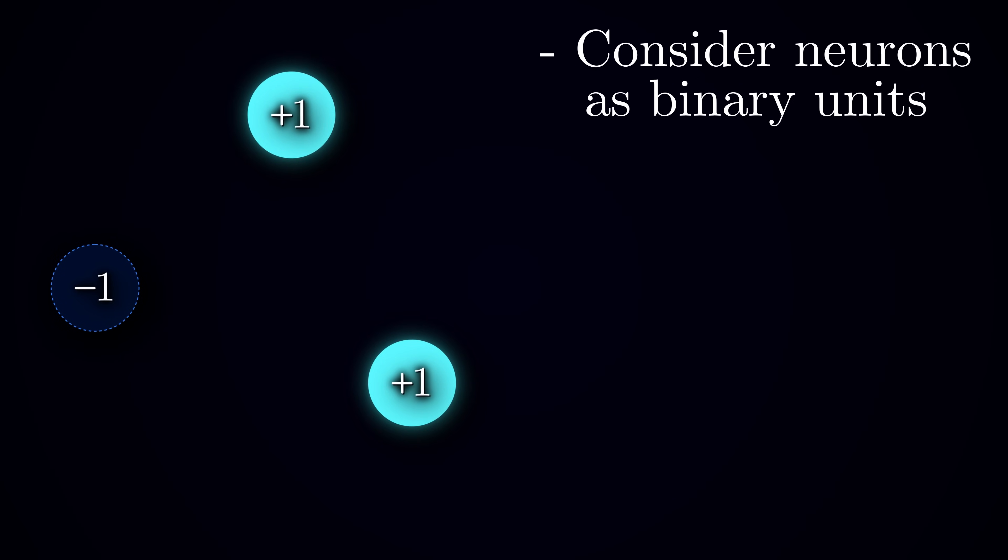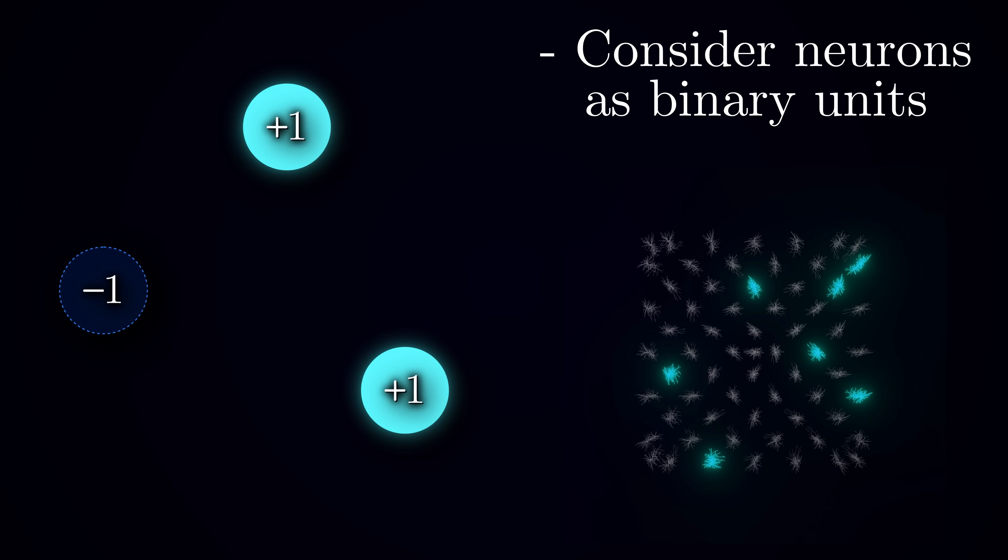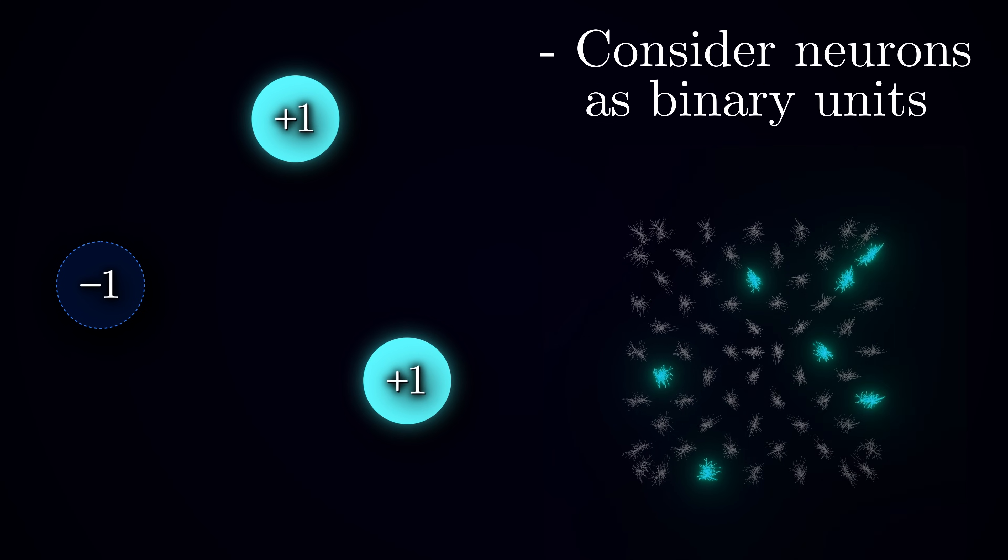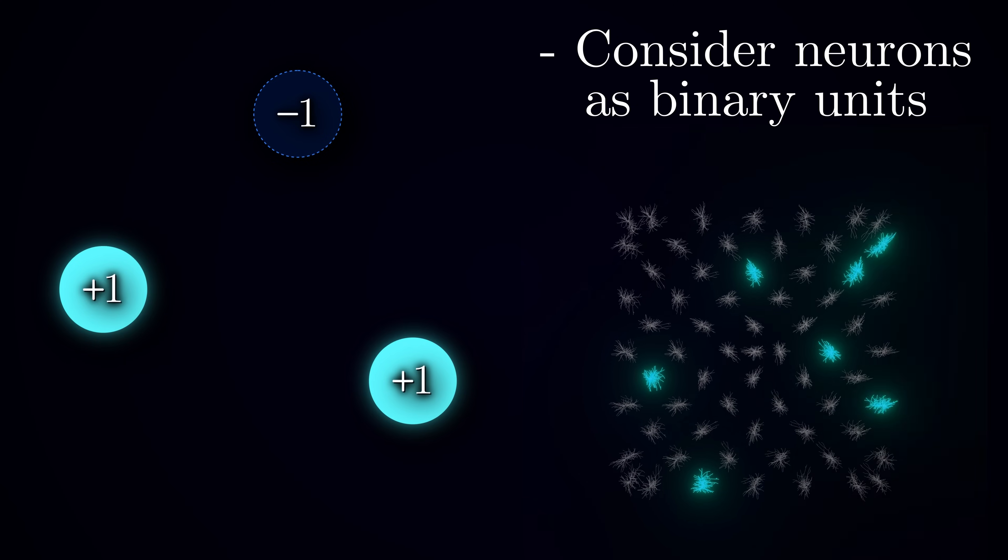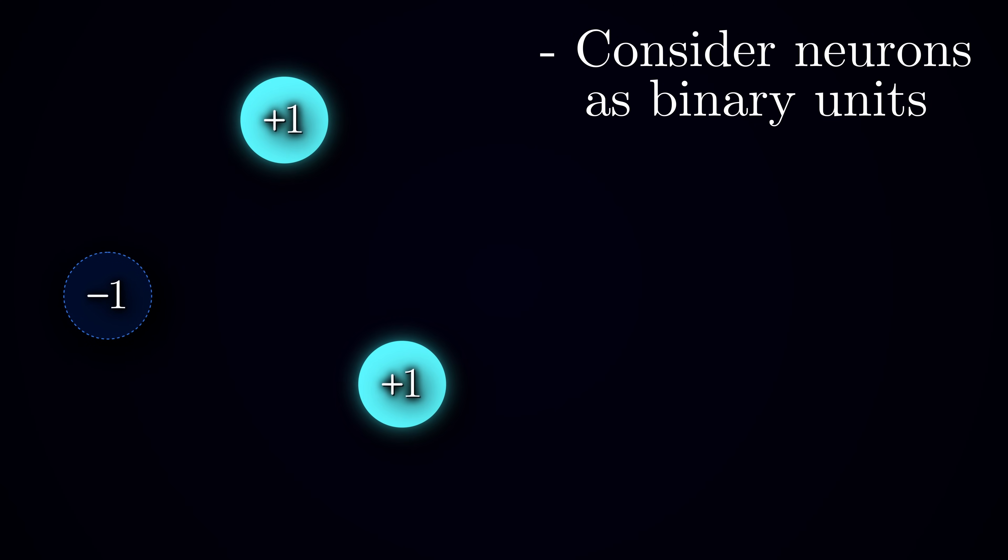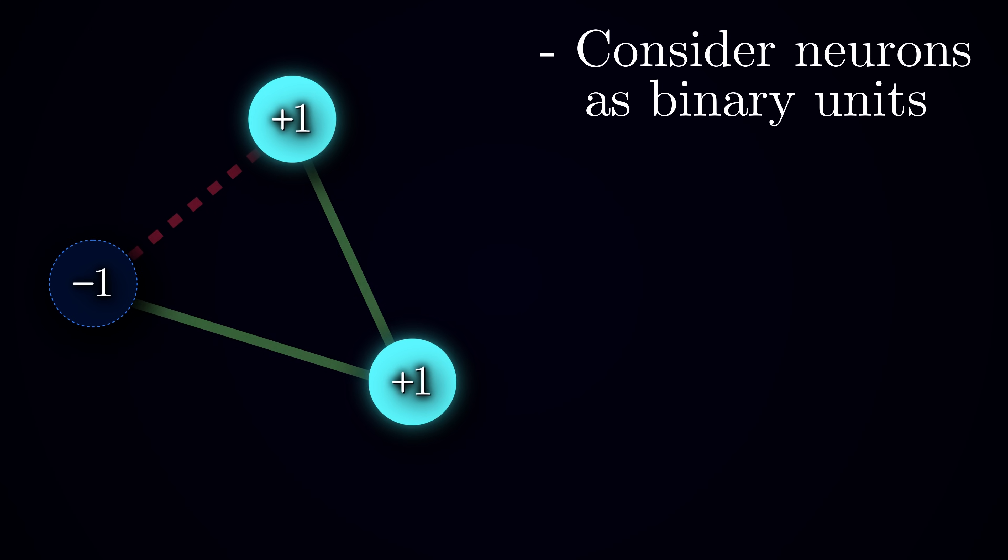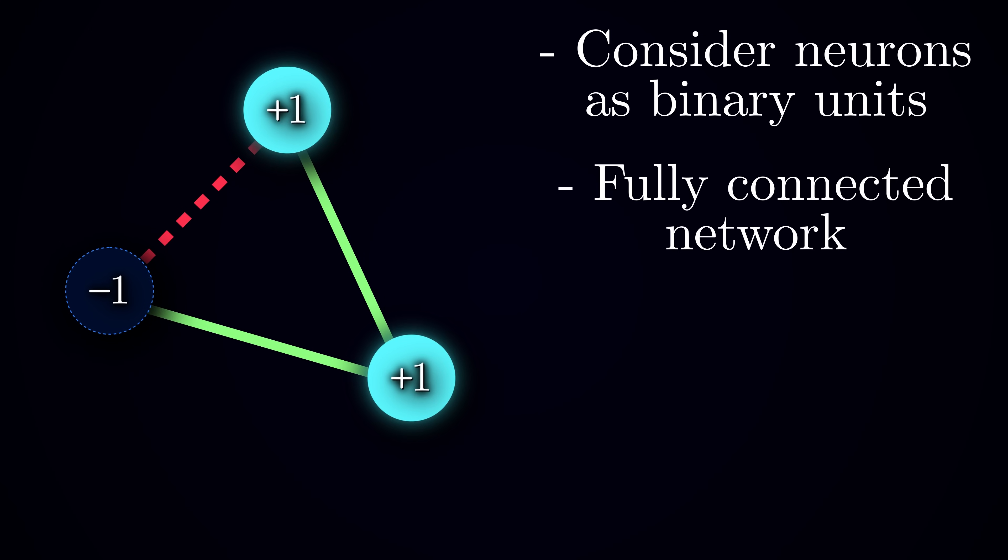Let's consider a set of neurons, which we can think of as abstract units that can be in one of two possible states, plus one or minus one. This is a simplified analogy of how nerve cells in the brain encode information through patterns of firing. They either generate an electrical impulse at a given point in time or remain silent.